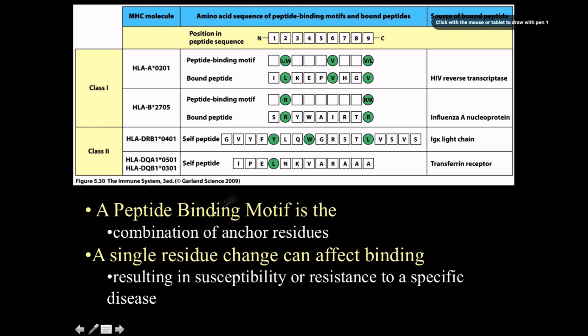The peptide binding motif is the combination of the anchor residues for each MHC molecule. A single residue change can affect the binding, resulting in susceptibility or resistance to a specific disease. If you change the structure of your binding site, you change its function — it may be more or less compatible with a specific peptide.